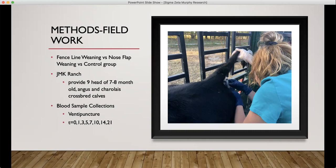At T equals zero was when we weaned and when we vaccinated all of the calves. We collected blood samples via venipuncture, which we then collected on days zero, one, three, five, seven, ten, fourteen, and twenty-one.